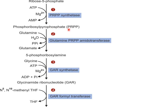PRPP then undergoes an amination reaction. The amide group from glutamine is transferred to PRPP by glutamine PRPP amidotransferase, leading to the synthesis of 5-phosphoribosylamine. This step is the rate-limiting step for de novo synthesis of purine nucleotide, and glutamine contributes N9 of the purine ring here. Then, 5-phosphoribosylamine is converted to glycinamide ribonucleotide by glycinamide ribonucleotide synthetase, where glycine contributes C4, C5, and N7, with consumption of one ATP.